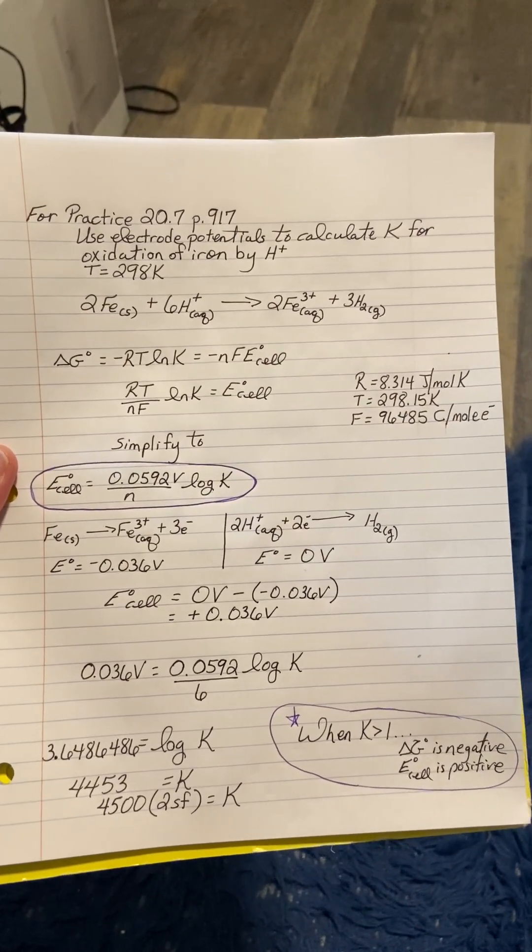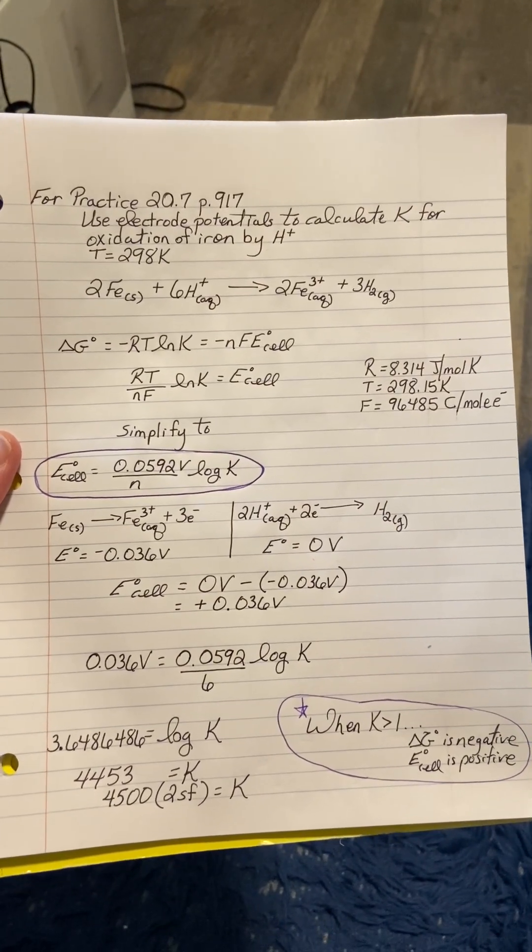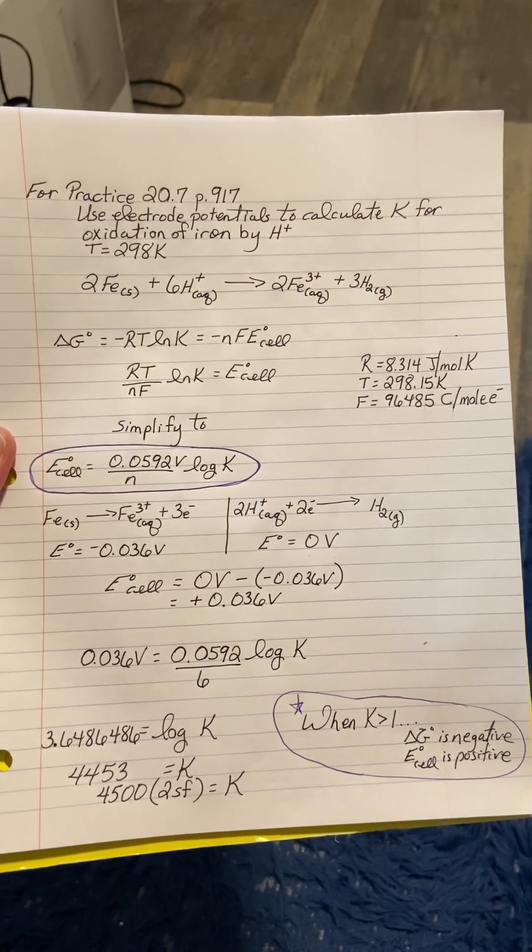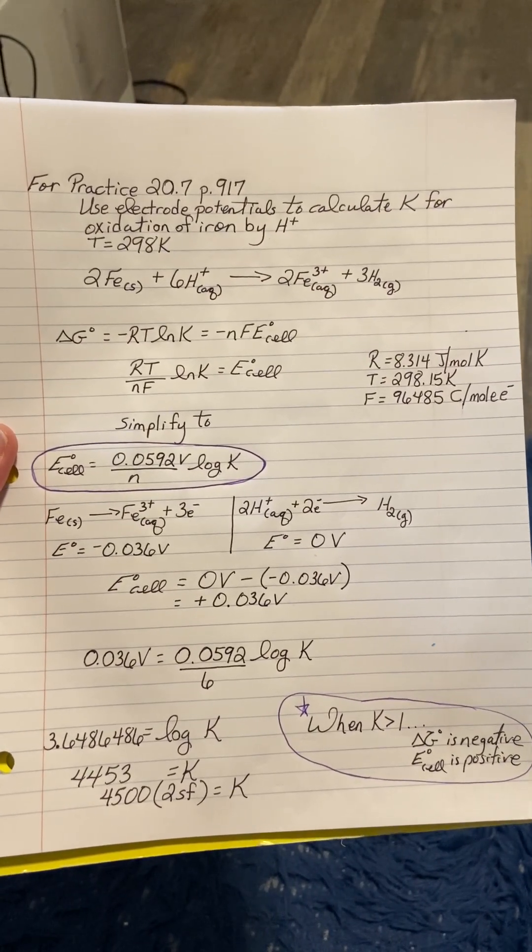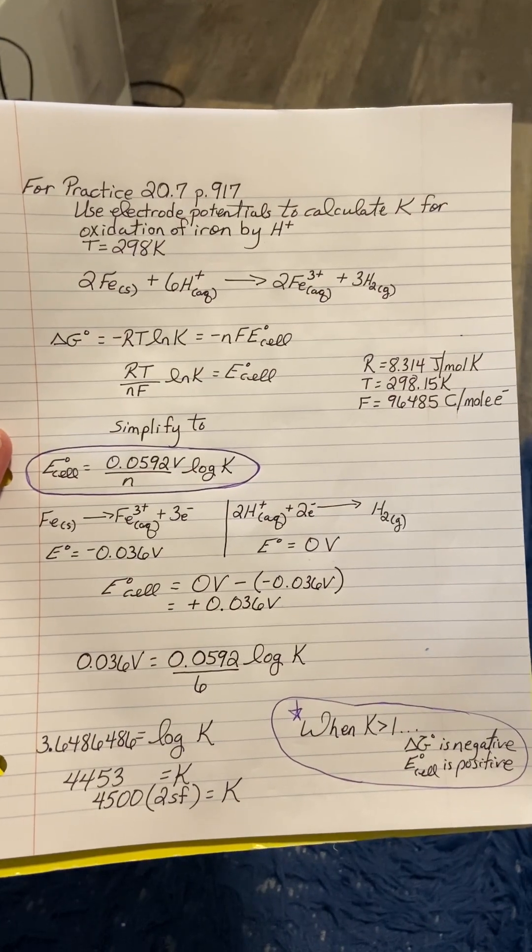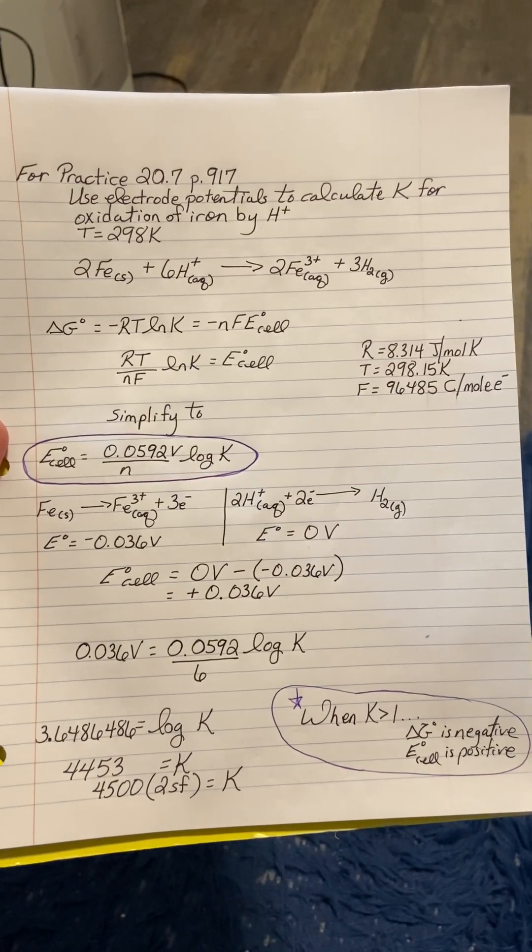In this problem we're going to connect and relate two equations, one from chapter 19 and one from chapter 20. Both equations solve for delta G, Gibbs free energy, but we're going to set them equal to each other.